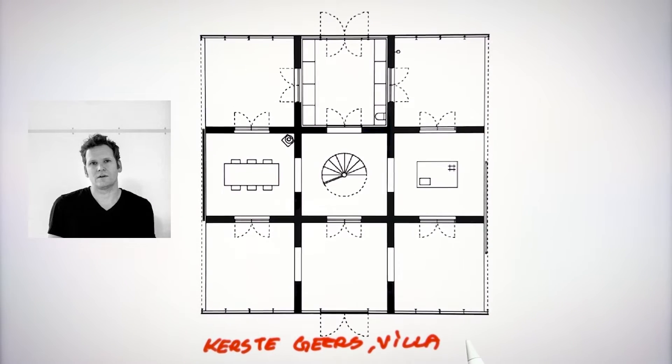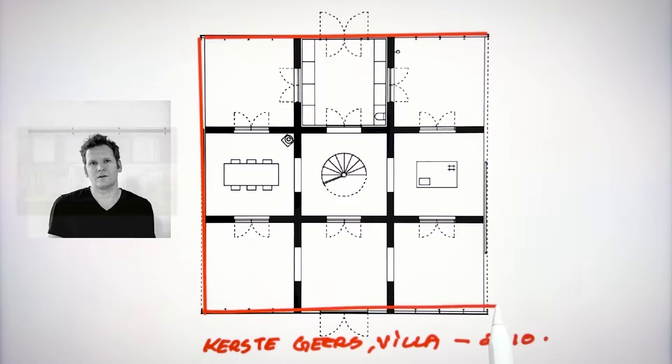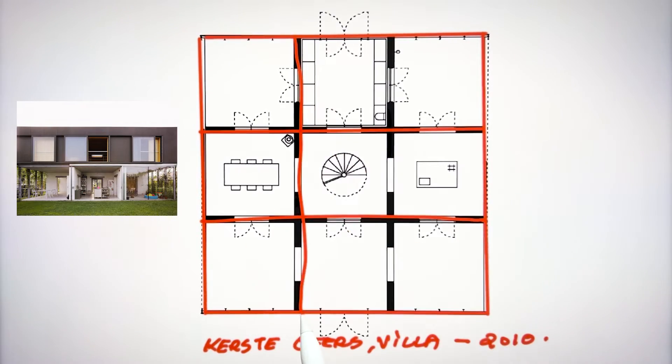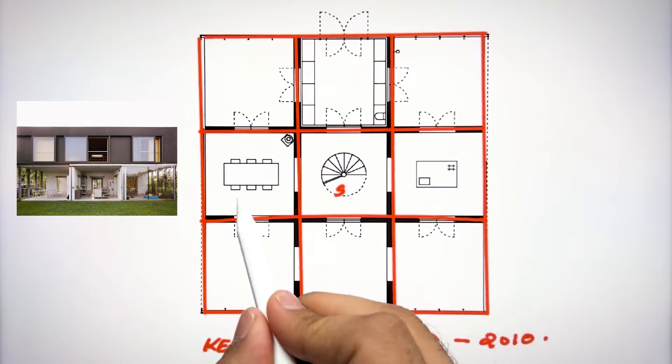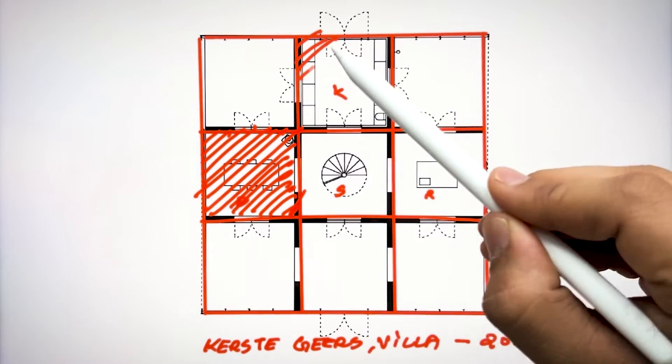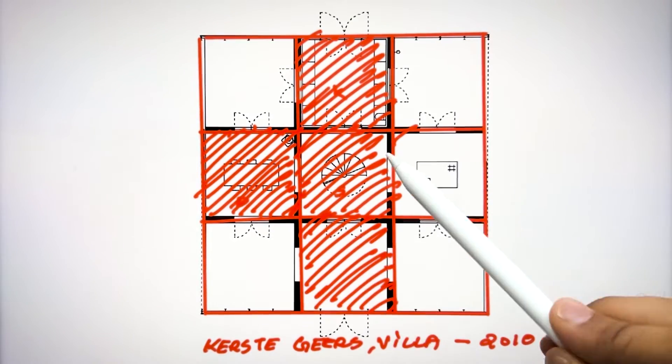This villa was designed by Pezo von Ellrichshausen in 2010 and this concept of nine grid was not historically developed. Even the new architects are also using the same concept of nine grid. In this, Pezo blended the spaces with the nine grid concept and simplified the house design.